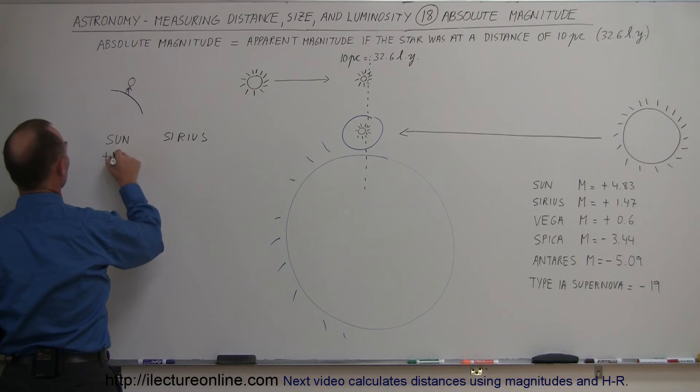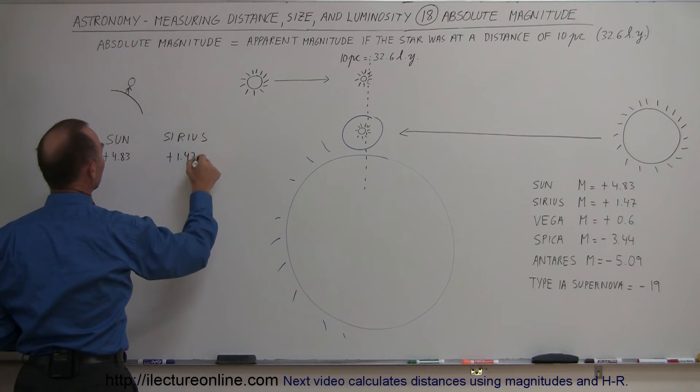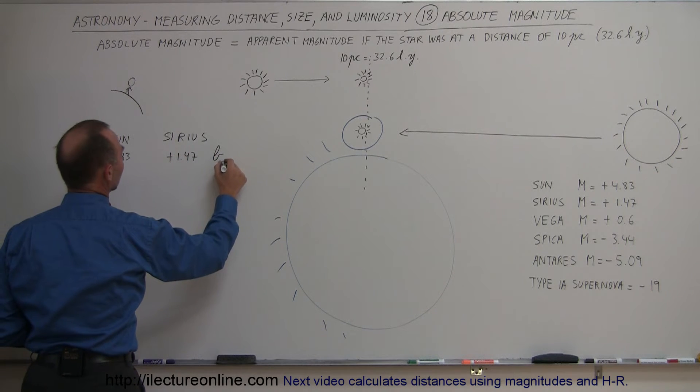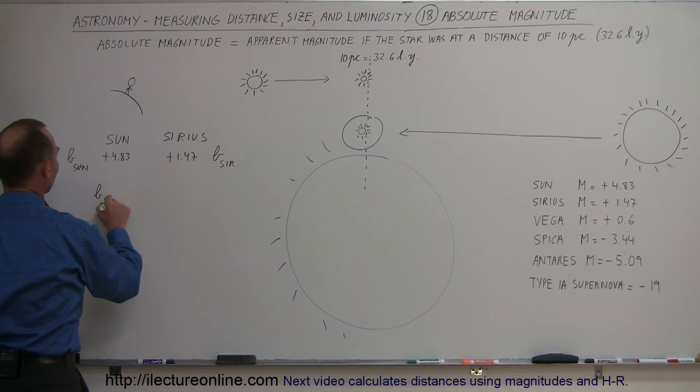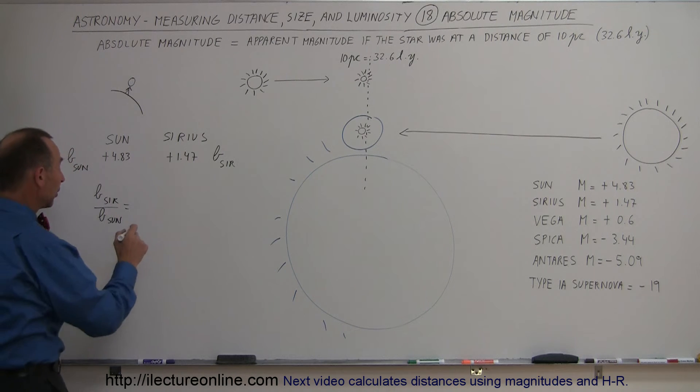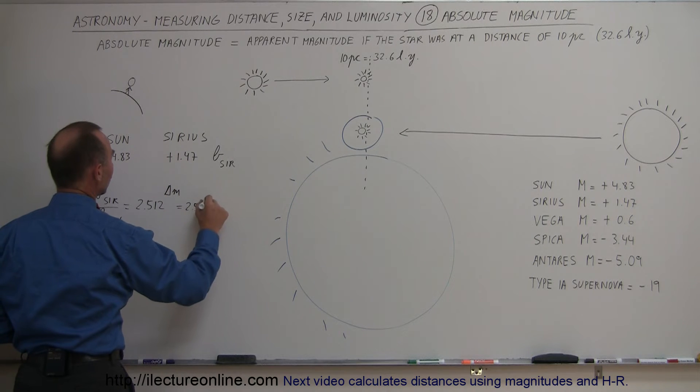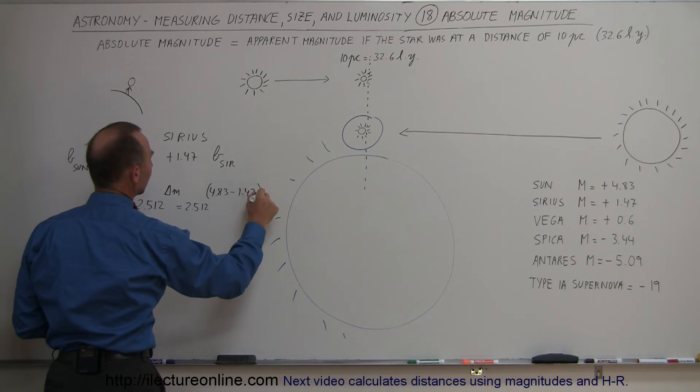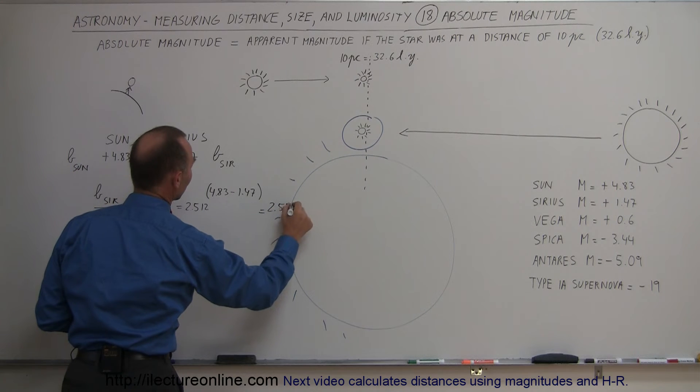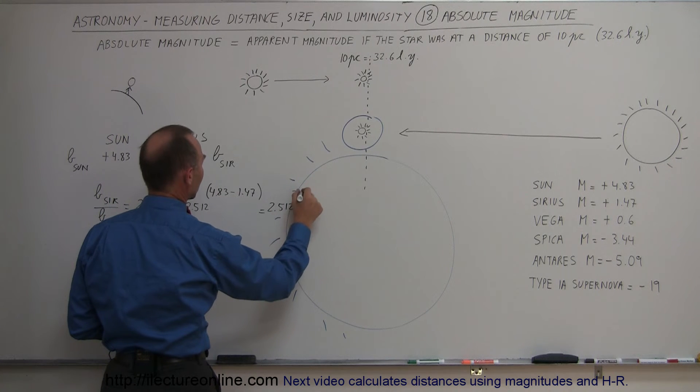So if the sun has a magnitude of plus 4.83 and Sirius has a magnitude of plus 1.47, let's call that the brightness of Sirius and the brightness of the sun. And now let's compare the two. So the brightness of Sirius divided by the brightness of the sun, so that would give us the ratio of the luminosities is equal to 2.512 raised to the difference in the magnitudes, which is 2.512 raised to 4.83 minus 1.47. And so that would be equal to 2.512 raised to, if you subtract that from that, you get 3.36.